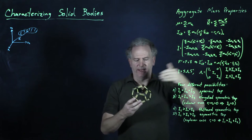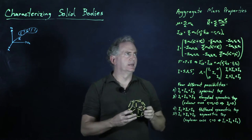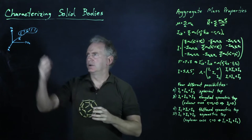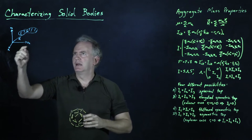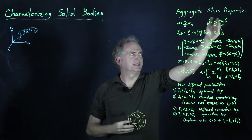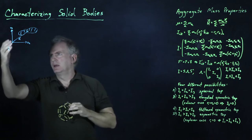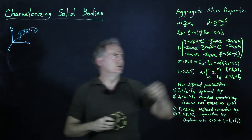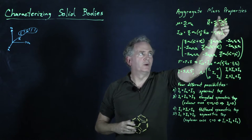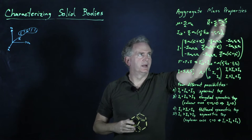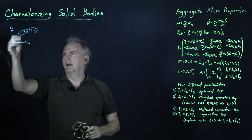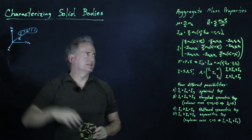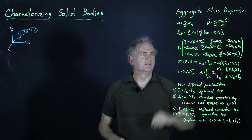The first is the total mass, which is the sum of all the individual masses in the body. The next is the vector to the center of mass. If we take the mass-weighted radius from some origin of a right-handed coordinate system to the points on the body, normalized by the total mass, then we get a vector to the center of mass from some reference coordinate system. That is called the location of the center of mass.